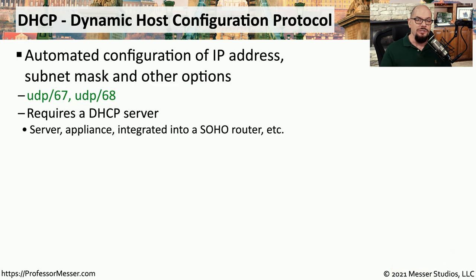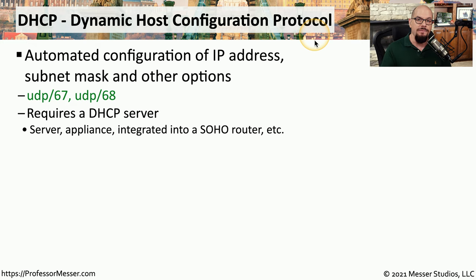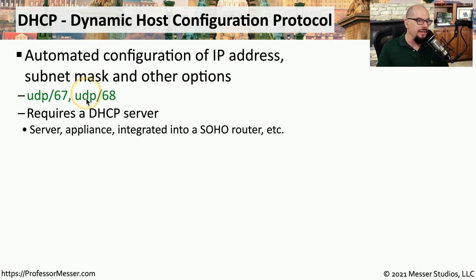If you've ever connected to a network for the first time and were assigned an IP address automatically, you were probably using DHCP, or the Dynamic Host Configuration Protocol. This allows you to automatically configure devices with an IP address, a subnet mask, a default gateway, DNS settings, and other IP configuration options. DHCP commonly uses UDP port 67 and UDP port 68 to provide this automatic configuration function.